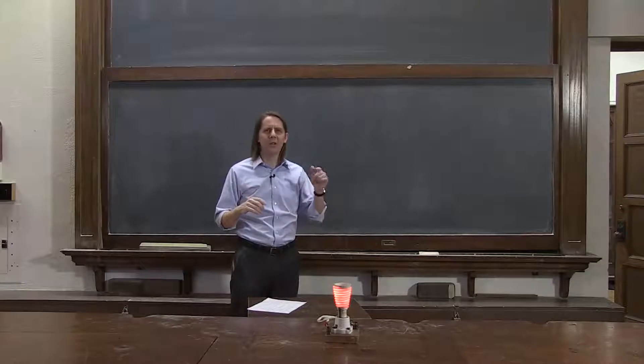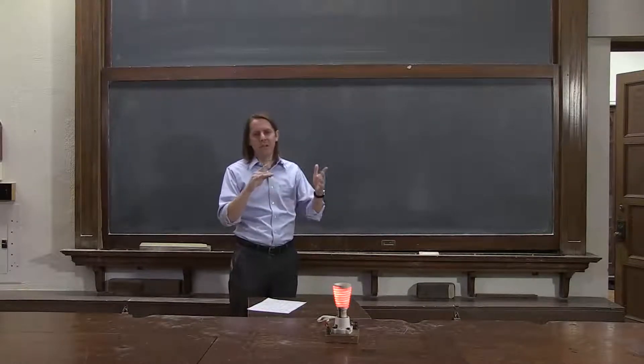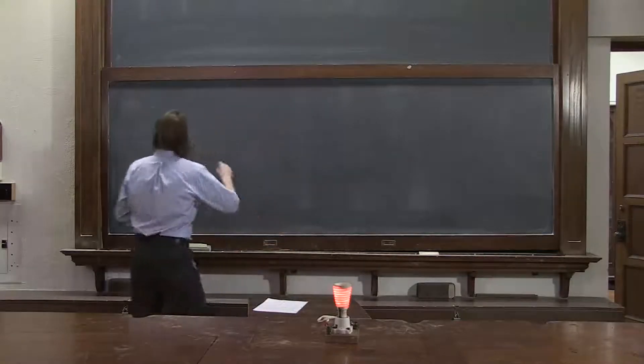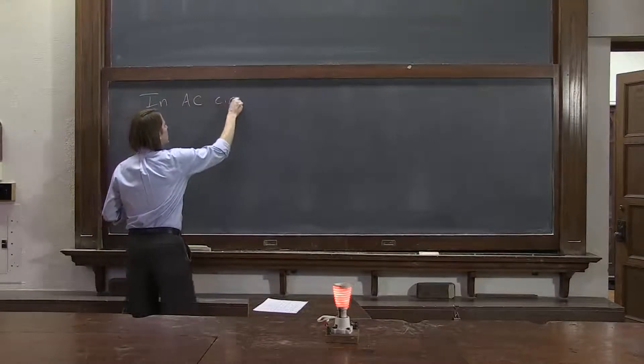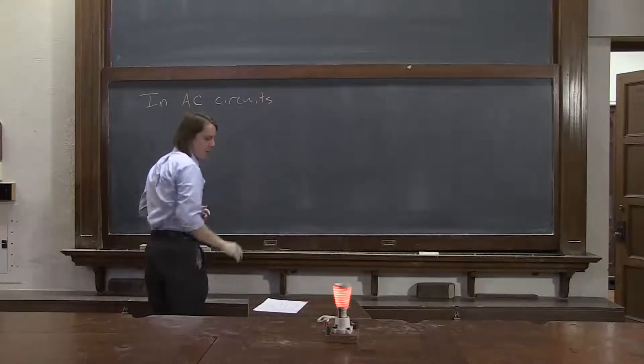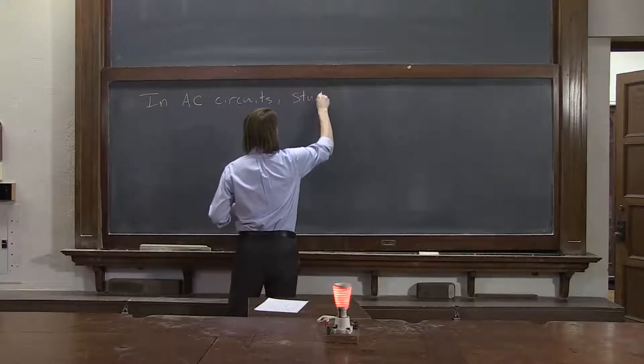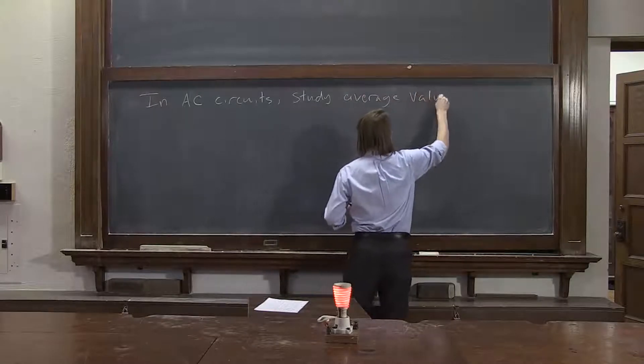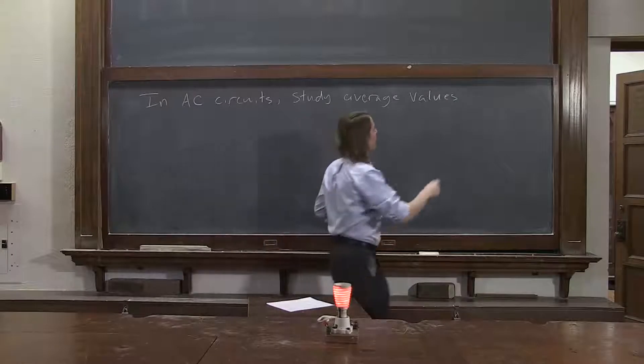You could keep up with the voltage, the oscillating voltage, and the oscillating current in each element. But that's a lot of them to keep up with. When they get out of phase, it gets very complicated. So in AC circuits, we'd like to study average values to simplify things.